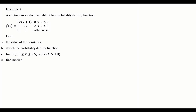Example 2: a continuous random variable x has the probability density function f(x) = k(x+1) for x between 0 and 2, 2k for x between 2 and 3, and 0 otherwise. The questions are: (a) find the value of k, (b) sketch the probability density function, (c) find P(1.5 ≤ x ≤ 2.5) and P(x > 1.8), and (d) find the median.